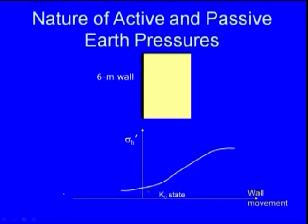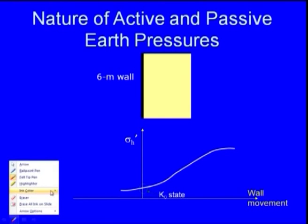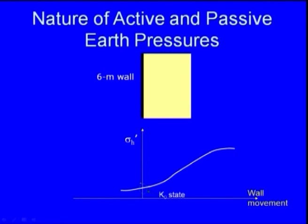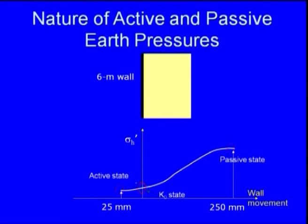Regarding the nature of active and passive earth pressure for a 6-meter wall: to reach the active state, a wall movement of about 25 mm is required; to reach the passive state, approximately 250 mm is required. This shows how active and passive earth pressure varies from active to passive state.